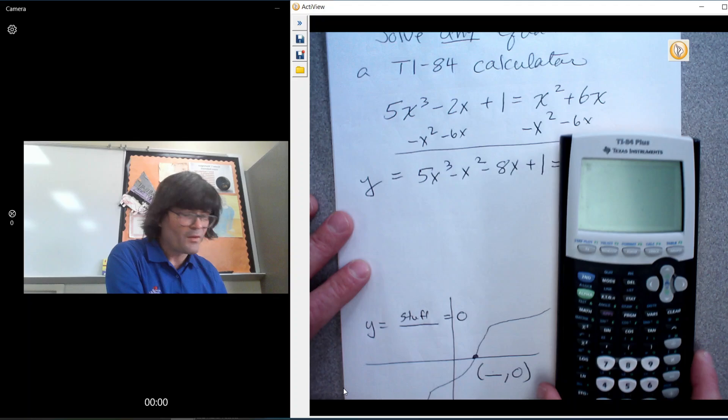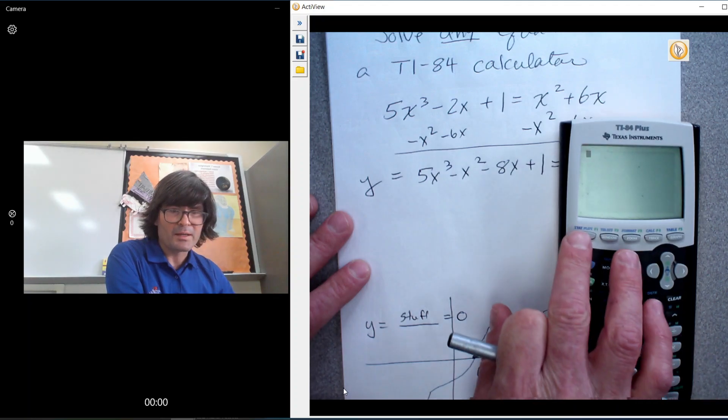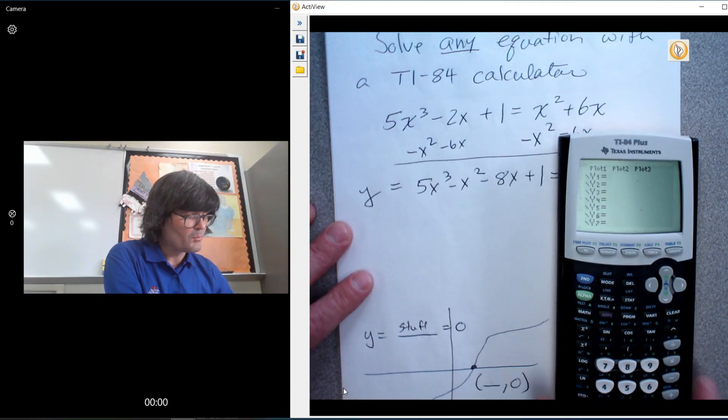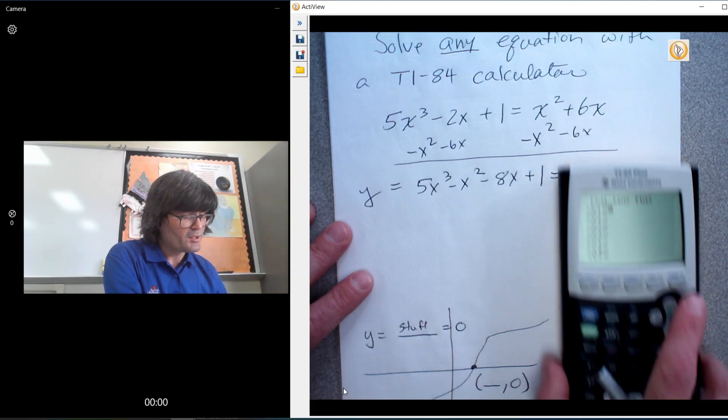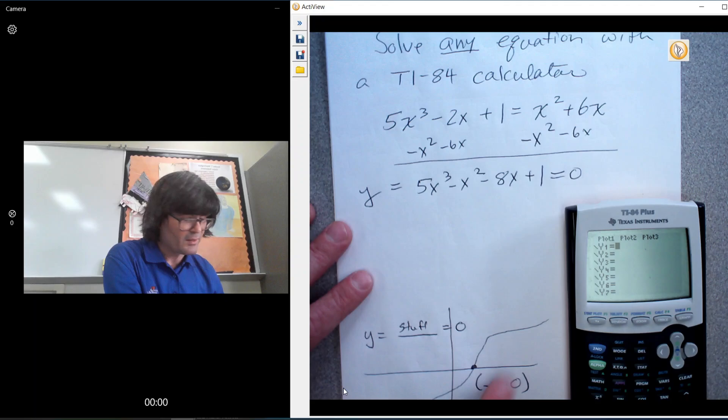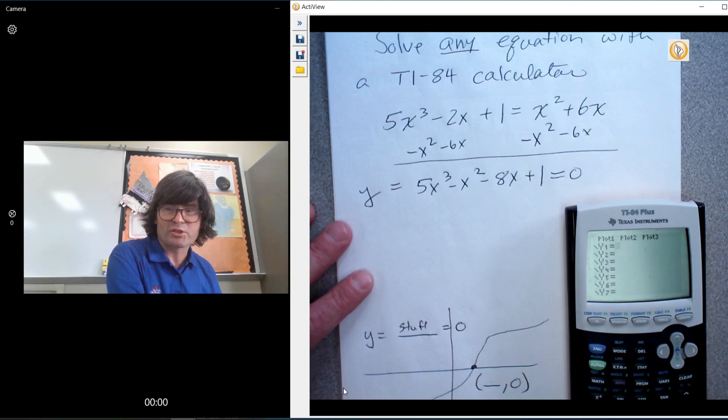here's my TI-84. If you push y equals right here, you get this prompt that says y1 equals an equation. So I'm going to just graph this, say I want to know when it's equal to zero, and thus you can find the zero here, and that's your solution. We'll check it.